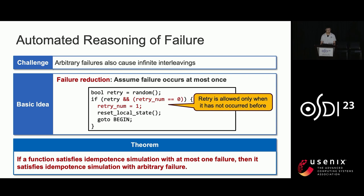However, addressing concurrency alone is not enough for automated verification. We also propose a technique called failure reduction to address arbitrary failure, which can also cause infinite interleavings. The basic idea is that we can assume failure happens at most once when proving idempotent consistency, because if a function satisfies idempotent simulation with at most one failure, then it must satisfy idempotent simulation with arbitrary failure.